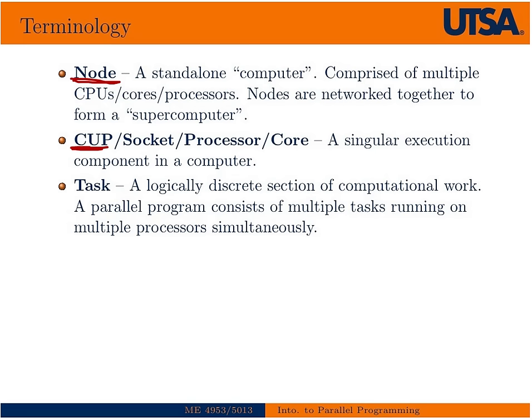CPU has some other words that are basically synonyms: socket, processor, core. These are not strictly synonyms, but for the purposes of our class they will be. A CPU is a singular execution component in a computer or in a node. Our computers typically have multi-core processors, and sometimes they have multi-socket multi-core processors. For instance, Shamu actually has eight cores per node — two quad-core sockets. So for the purposes of this class, we're going to use the words processor, core, and CPU to mean basically the same thing.